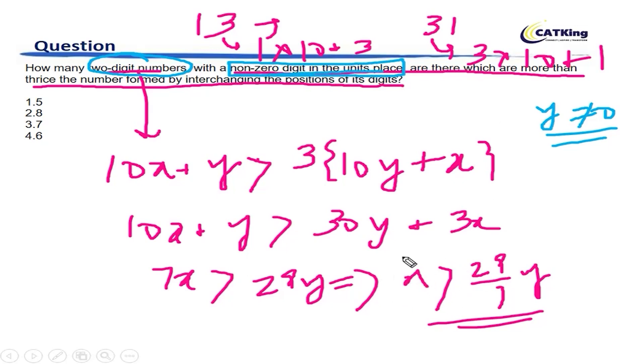So in that case, we can safely say that x is greater than 4y, where y is an integer.